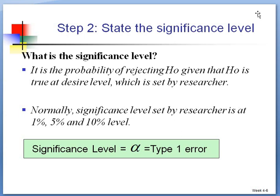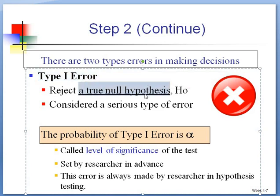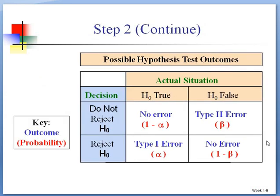The significance level, sometimes we will write alpha or type 1 error. There are two types of errors in making decisions. Type 1 error, meaning that reject a true hypothesis, which is considered a serious type of error. The symbol is alpha, and we always call it as level of significance. Type 2 error is failed to reject a false null hypothesis, and we always call it as beta.